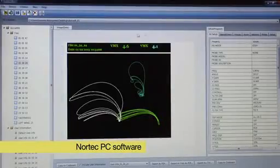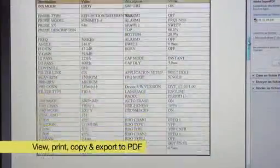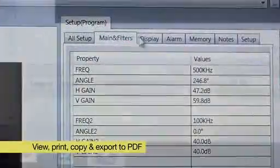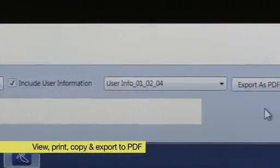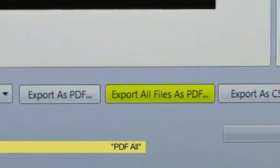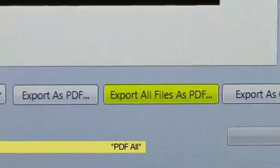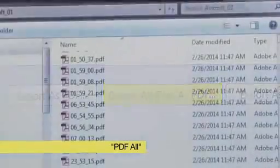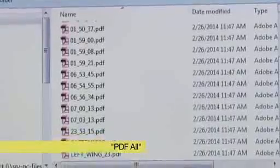In Nortec PC, signals or parameters can be viewed, printed, copied and easily exported into a PDF report at the touch of a button. The PDF all functions comes in particularly handy to archive all inspection files in a single operation.